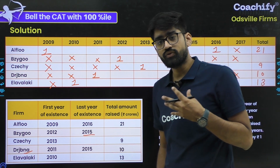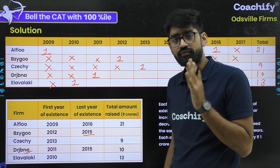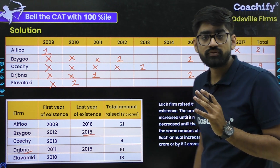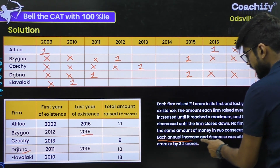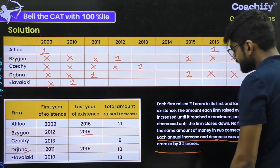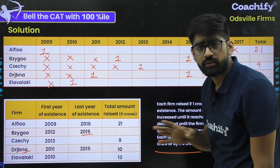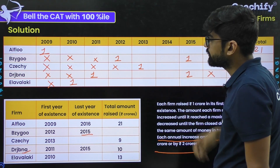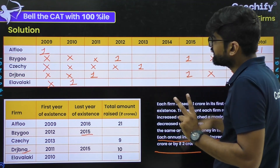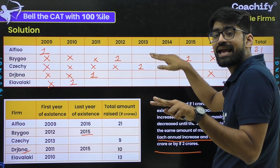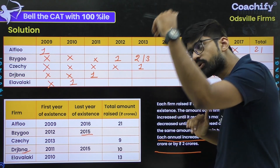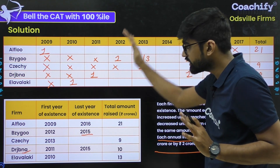Now we need to think about which firm to start with — it should be the one with the minimum years of operations and for which the total value is provided. The key constraint that each annual increase or decrease is either 1 CR or 2 CR eliminates many cases. For example, for B, in 2013 there are only two values possible: either an increase of 1 CR giving 2, or an increase of 2 CR giving 3.